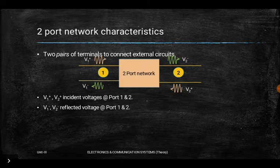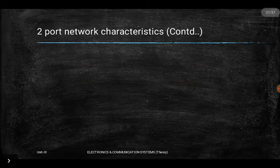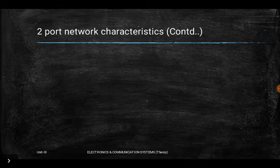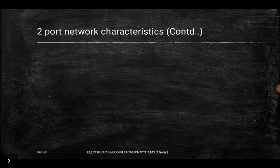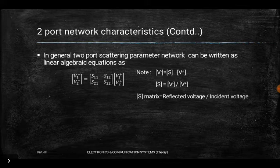For a two-port network, port 1 and port 2: the incident voltage is v1⁺ and reflected from port 1 is v1⁻; incident from port 2 is v2⁺ and reflected is v2⁻. This general two-port framework can be scaled to n ports. When we write two-port network equations as a 2×2 matrix, we get two algebraic equations to identify different quantities and characteristics.